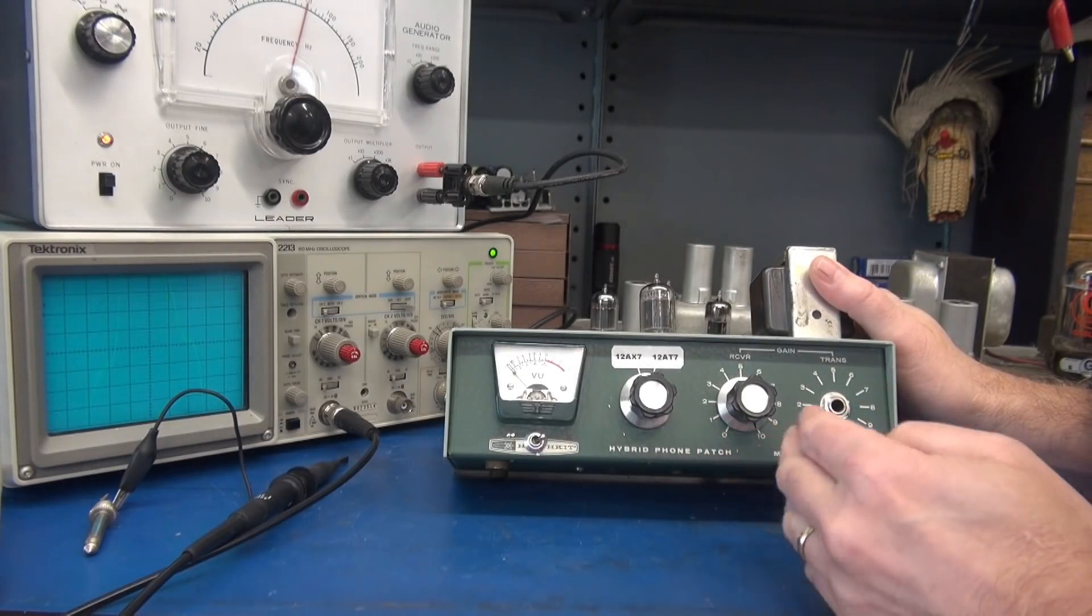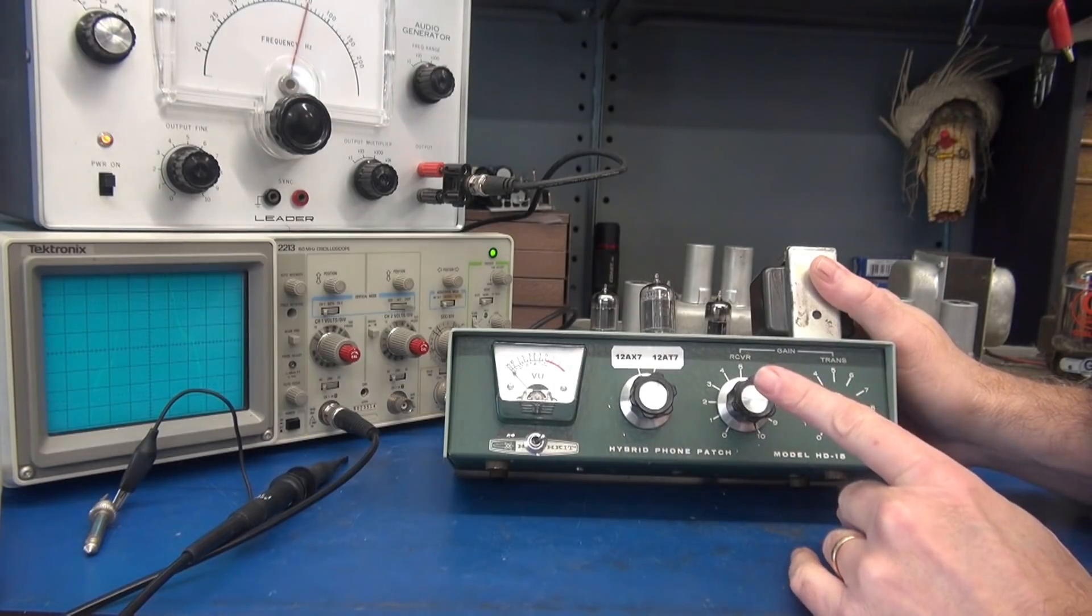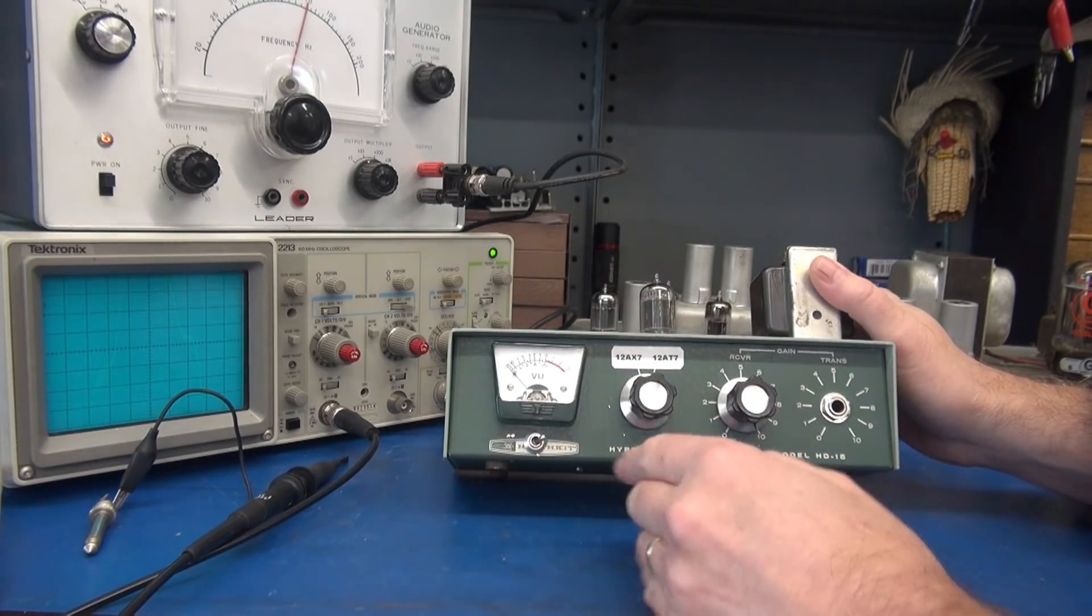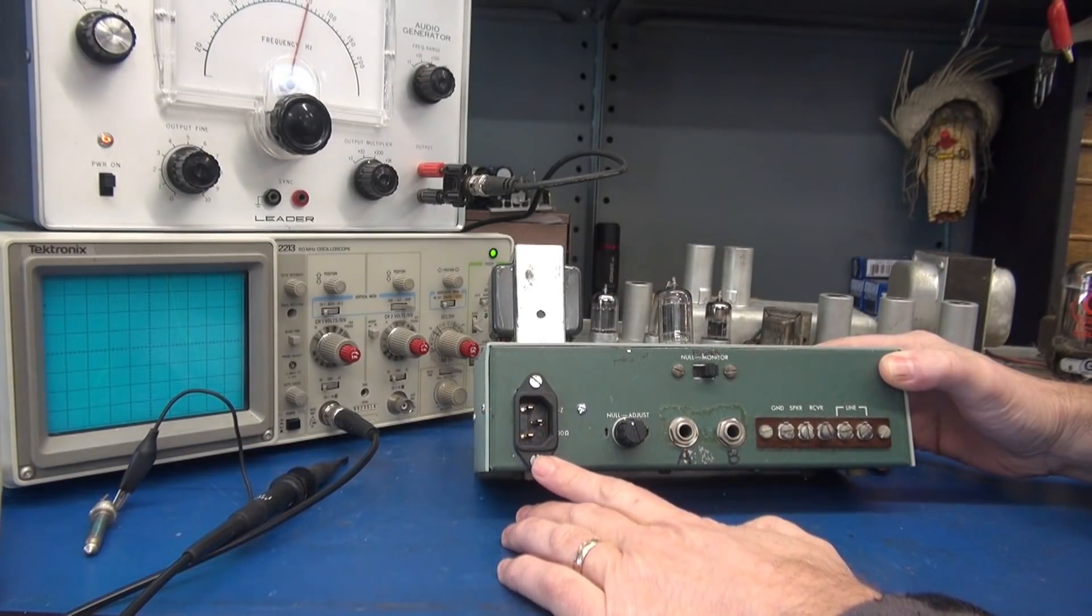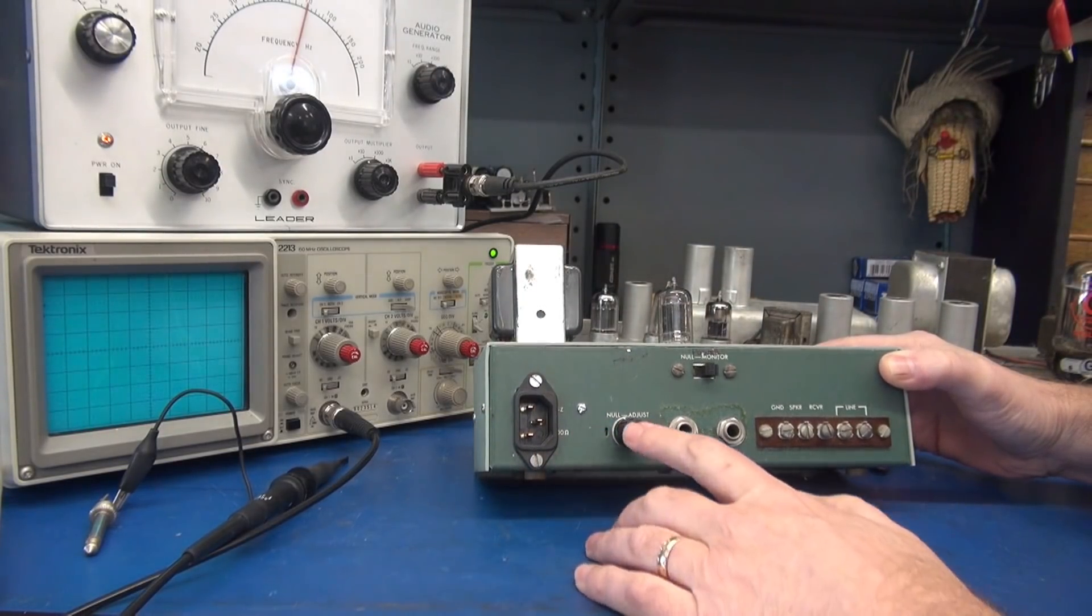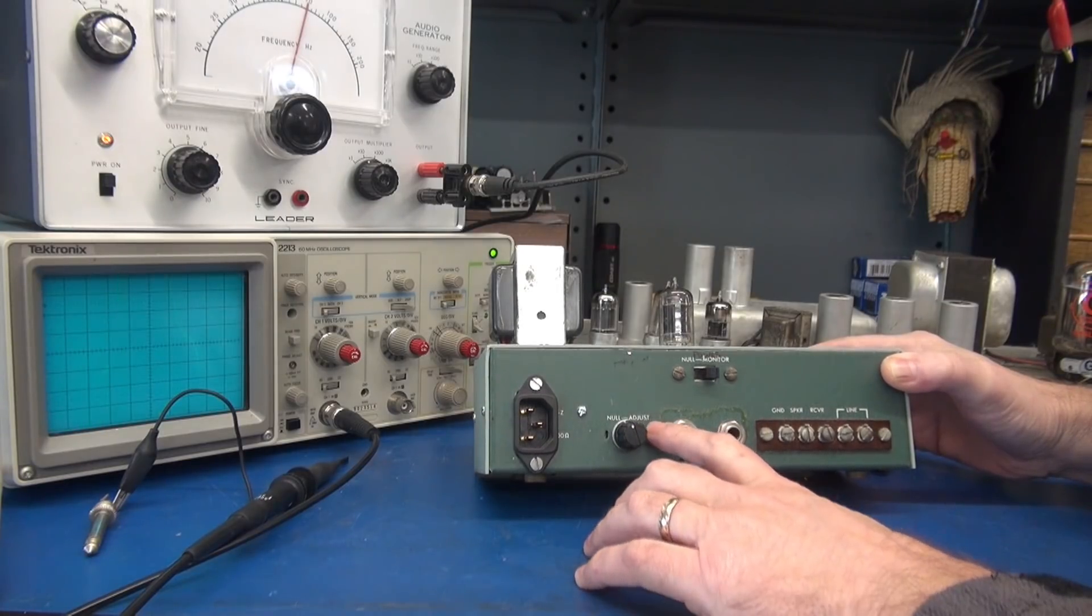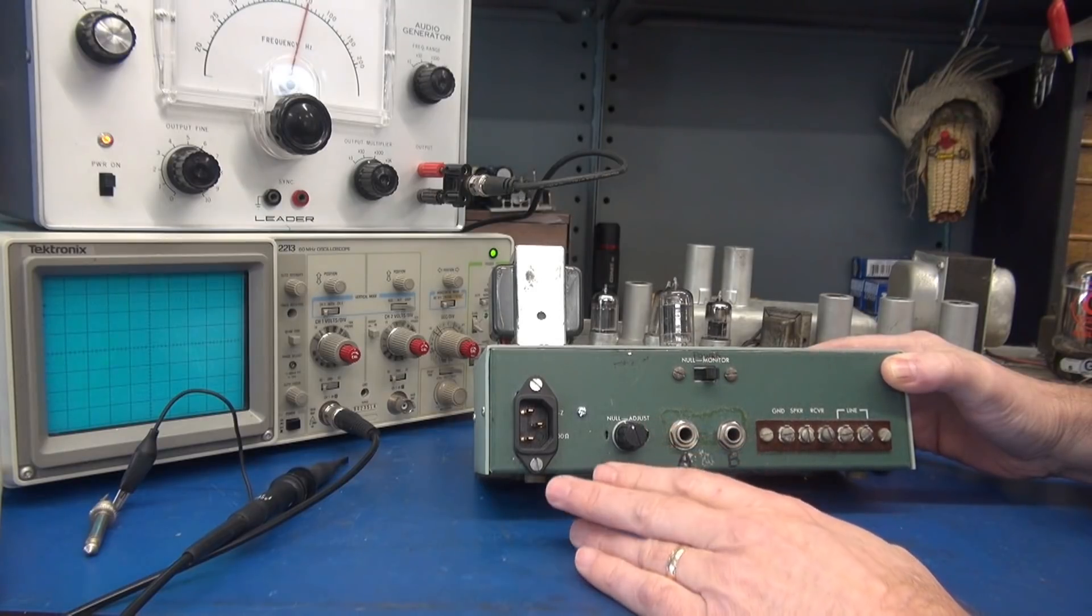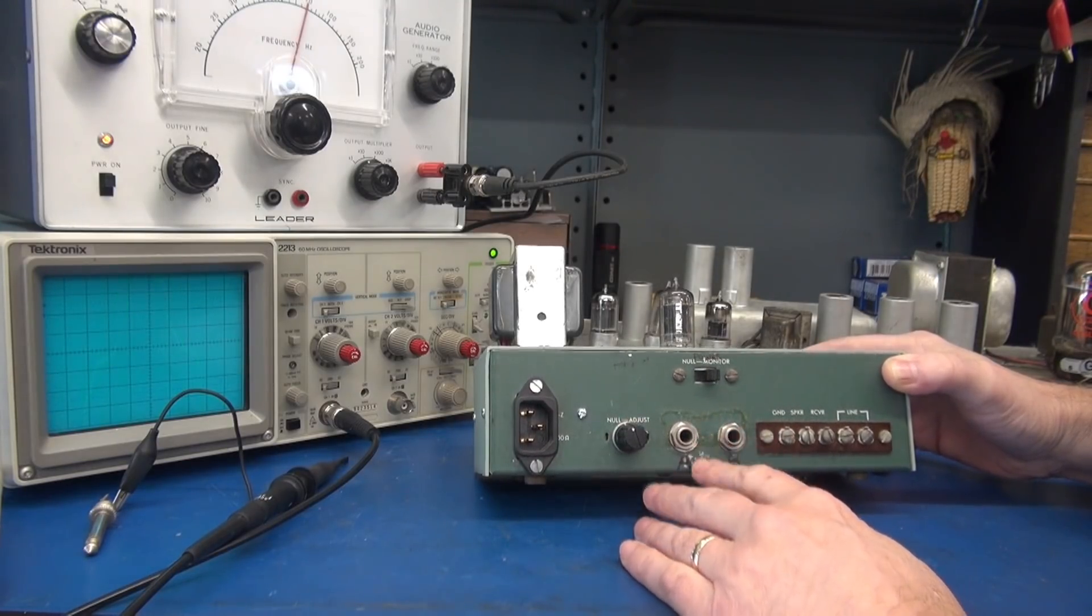This jack is an audio input jack. So you can inject either audio generator or your guitar and watch the signal on your oscilloscope. On the rear, we have our 120 volt AC input, and there is a fuse internal. This knob is the null adjustment.